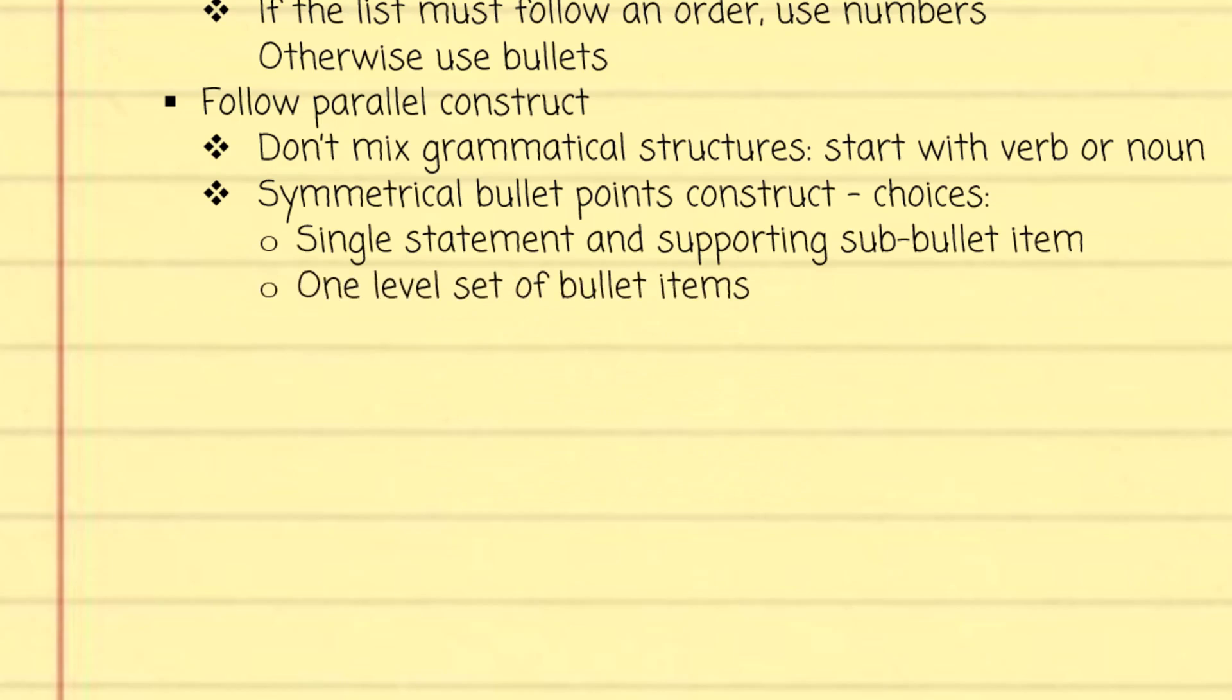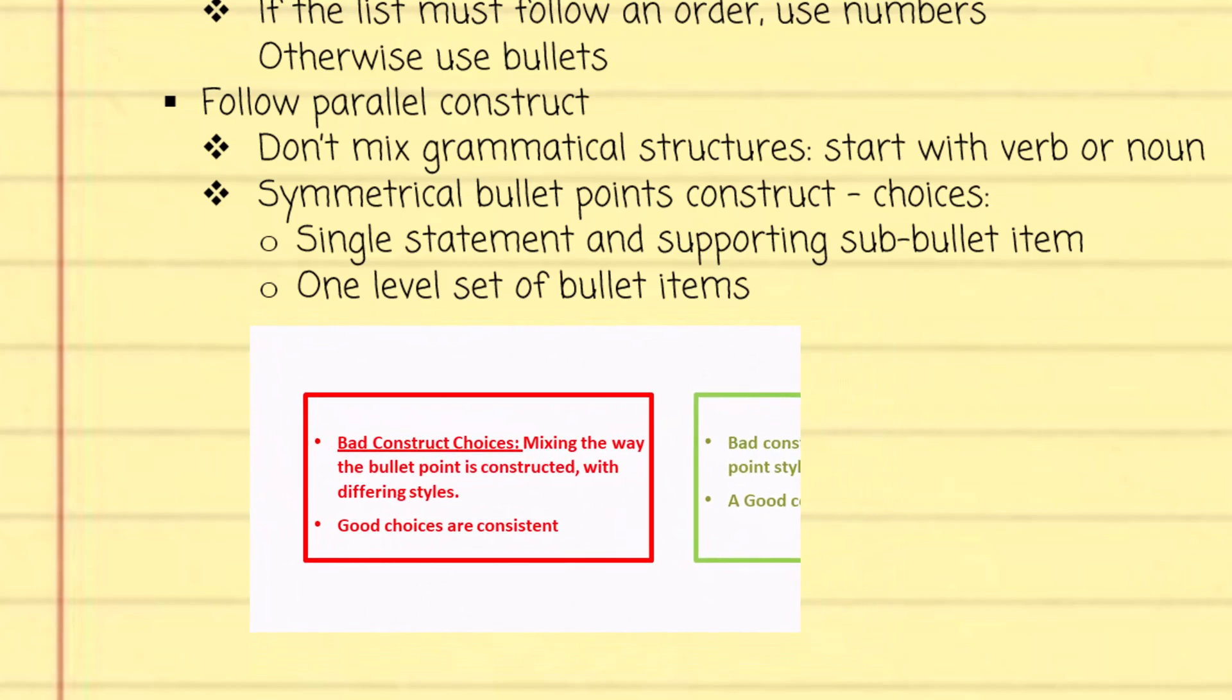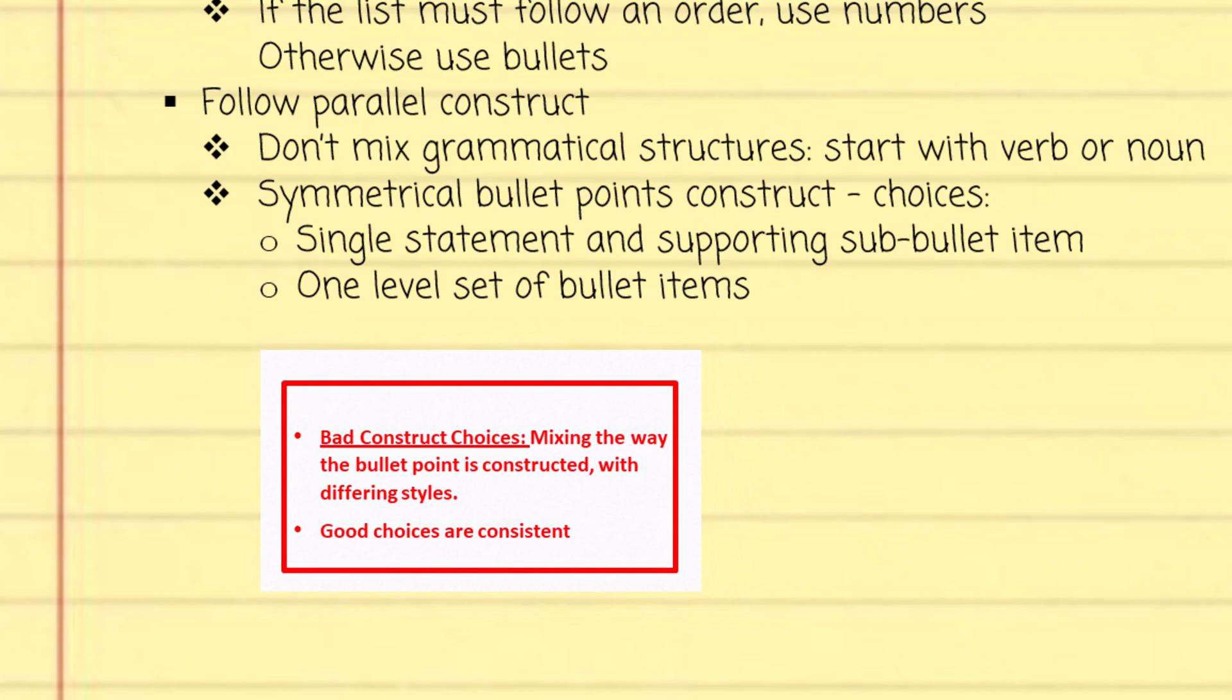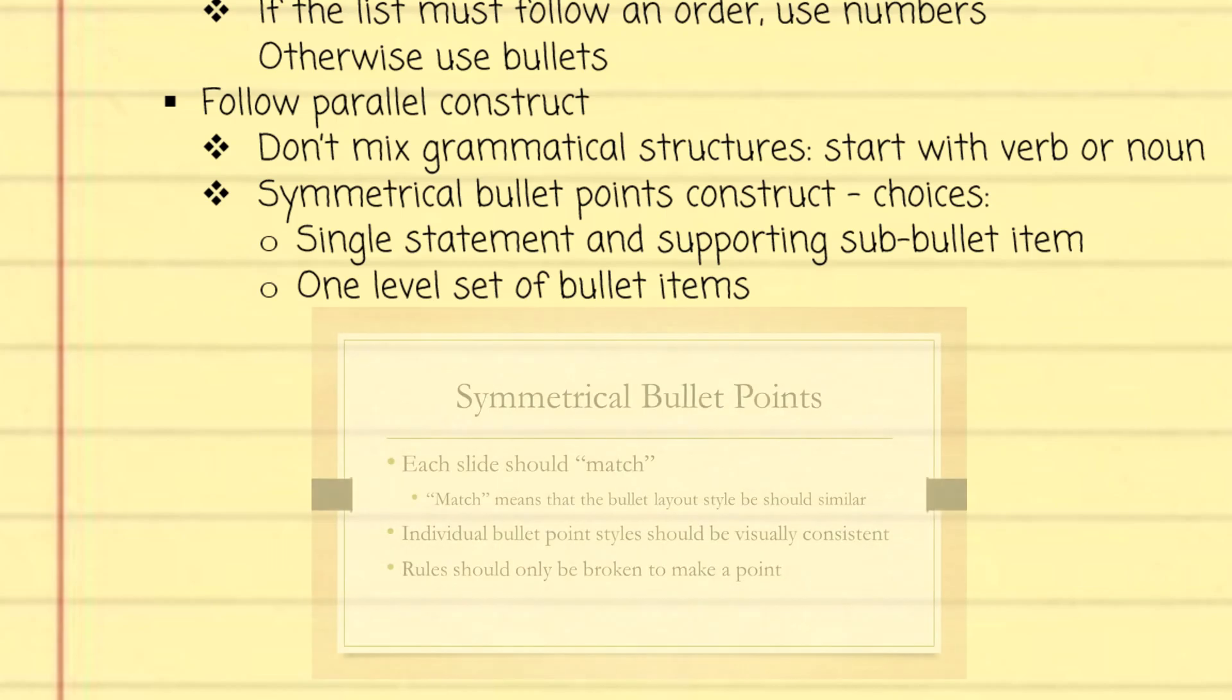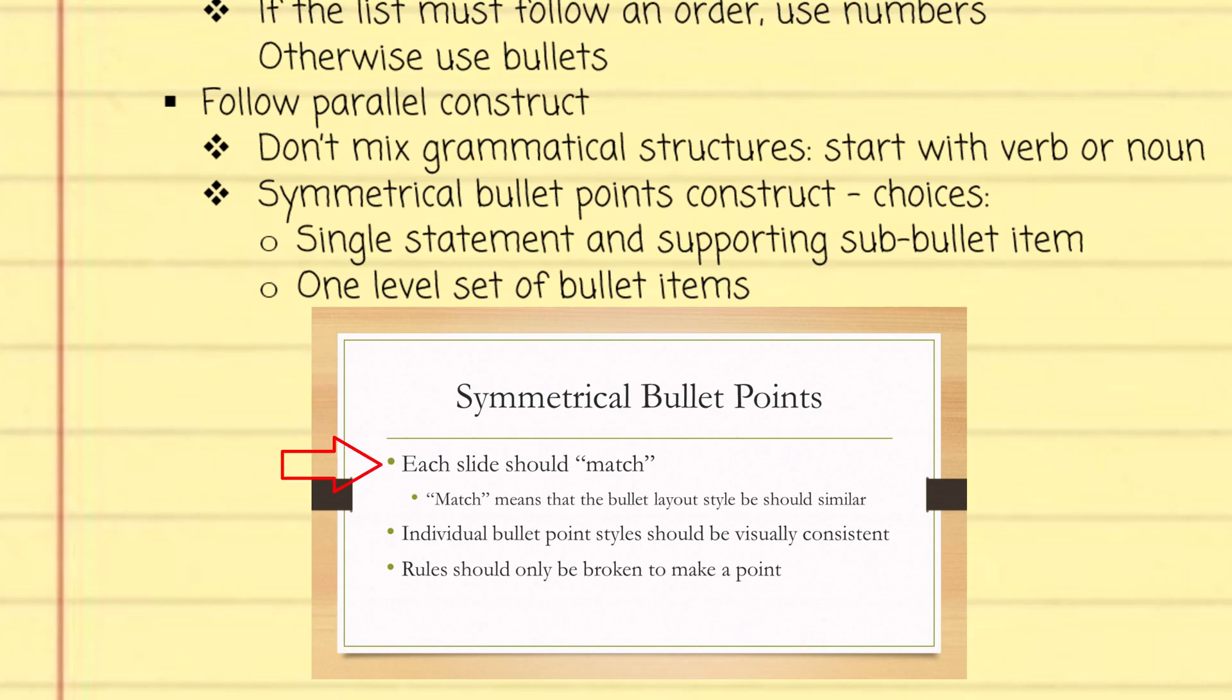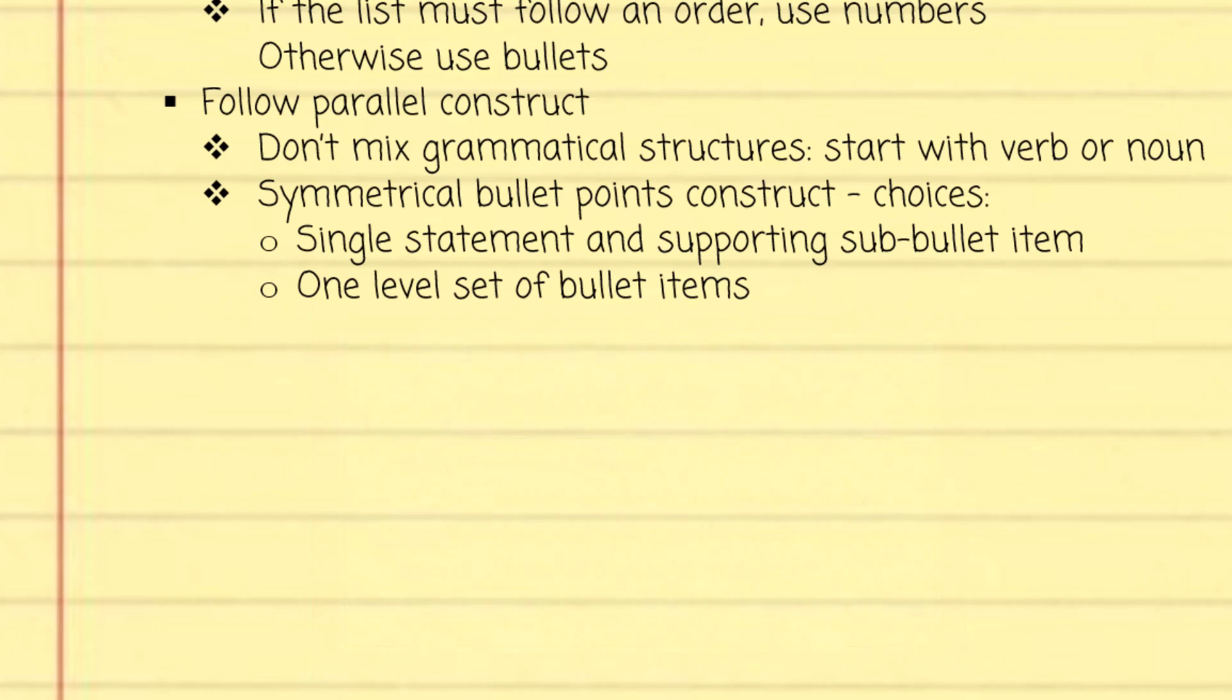Next up is symmetrical bullet point construction choices. Look at this example. By themselves, neither bullet is wrong, but when we combine them together, you see that the first one has an introductory statement and a colon and then some additional info. The second one is just a statement. On each slide, keep the style the same, one way or the other. And yes, there are always creative exceptions. Here I'm going to take a single complex bullet item and split it into two parts with a sub-bullet point, which may break the symmetry, but it helps drive home the point of a complex issue.